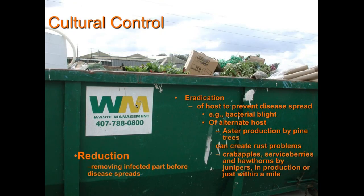To make everything sustainable, one of the first things in managing the environment is cultural control — keeping things clean, removing infected plant parts before disease spreads, and eradicating outbreaks from the greenhouse. Bacterial blight in particular can spread like wildfire. Also, if you're into aster production as a cut flower, be careful near two-needle pines — they can serve as an alternate host for a pine-aster commander rust, which I've actually seen infecting cut flower growers in the field.